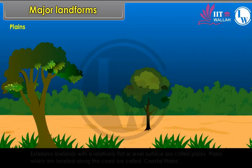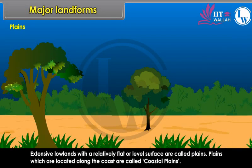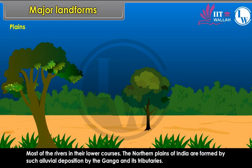Extensive lowlands with a relatively flat or level surface are called plains. Plains which are located along the coast are called coastal plains. Most rivers in their lower courses deposit alluvium. The northern plains of India are formed by such alluvial deposition by the Ganga and its tributaries.